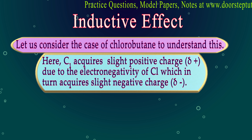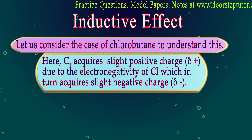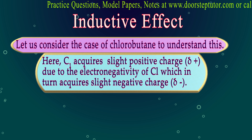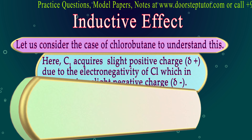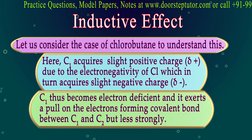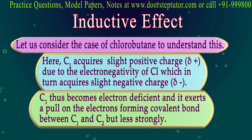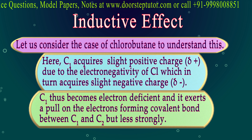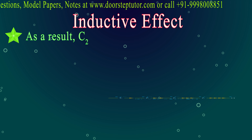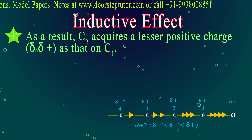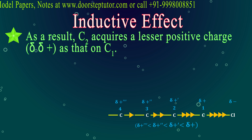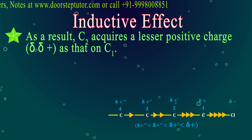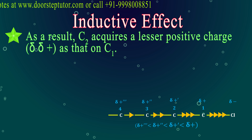Chlorine has more electronegativity, so C1 has a delta plus charge and chlorine has a delta minus charge. C1 becomes electron deficient and pulls electrons from C2 via a covalent bond. C2 will acquire a delta positive charge, but much lesser than C1 — it will have delta delta plus, which is less than delta plus.